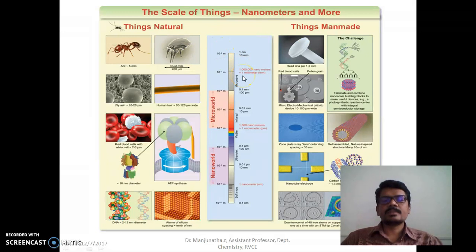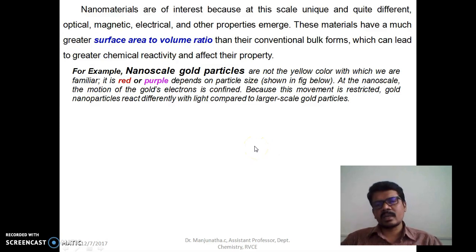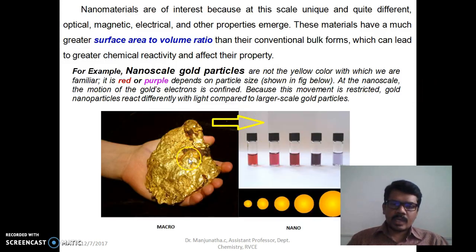Nanomaterials are of great interest because they have unique and quite different optical, magnetic, electrical properties. This is because of greater surface to volume ratio. I will just briefly explain the uniqueness of this nanomaterial by taking only the optical property. We know that the gold is actually yellow. All the gold we are using for utilities and other things is yellow color. But if you take this gold into nano size...